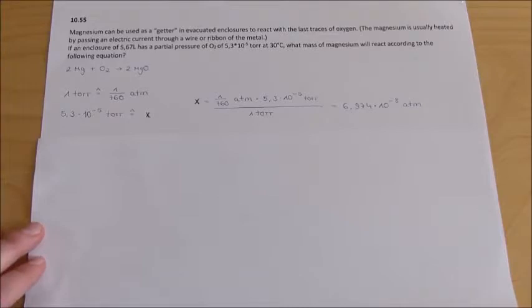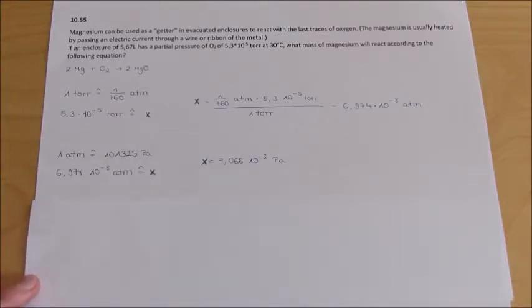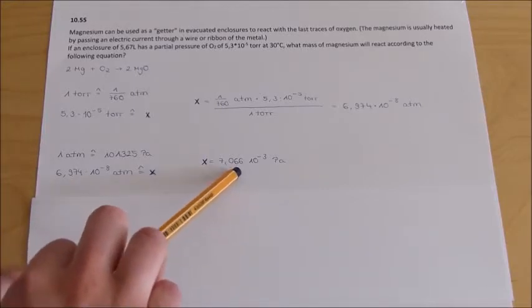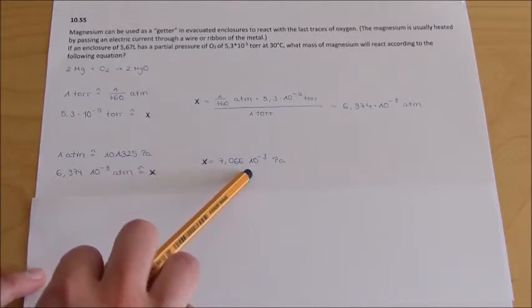Now we have to calculate the Pascal unit. 1 ATM equals 101325 Pascal. 6.974 × 10^-8 ATM equals X. X equals 7.066 × 10^-3 Pascal.